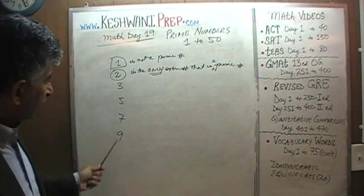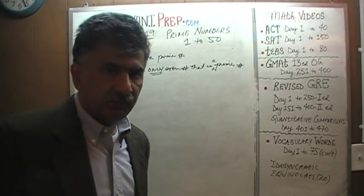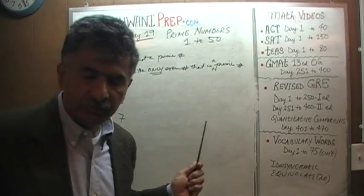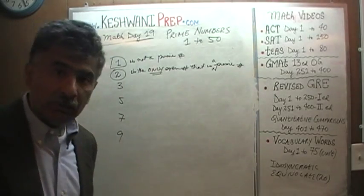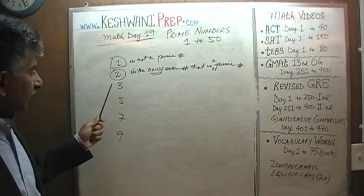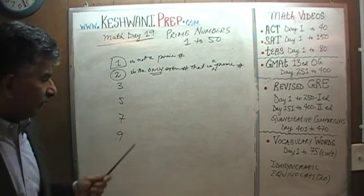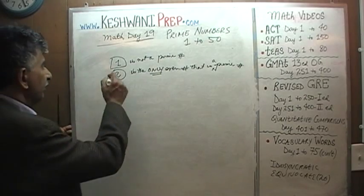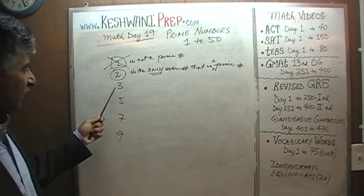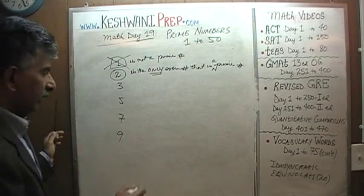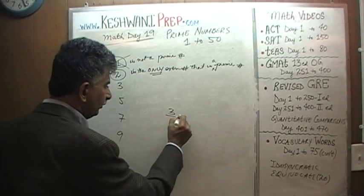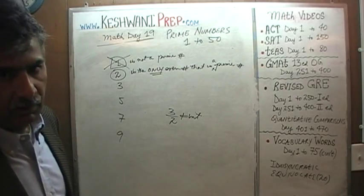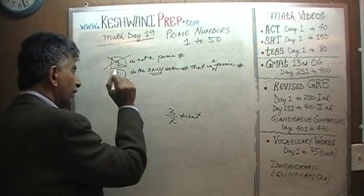How do we recognize if a given number is a prime number or not? We ask ourselves: can we divide this number by any of the previous prime numbers? Is 3 a prime number? The only prime number that comes before 3 is 2, and obviously 3 divided by 2 is not an integer. 3 cannot be evenly divided by 2. Therefore, 3 qualifies as a prime number.